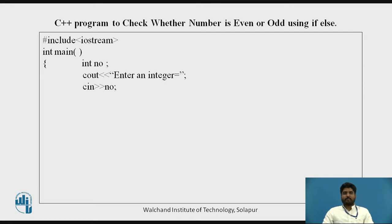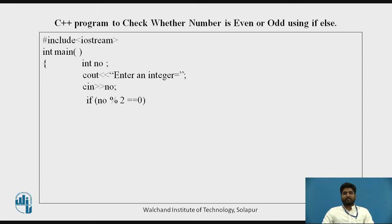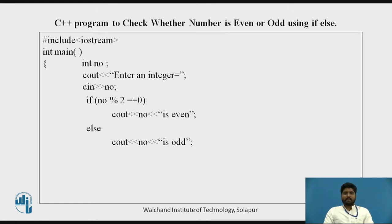We have #include iostream and int main. I have taken one variable called 'number', and using cout we prompt the user to enter an integer, which is stored in 'number'. If number % 2 (modulo, i.e., remainder when divided by 2) equals 0, then the number is even; else the number is odd.